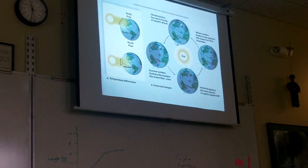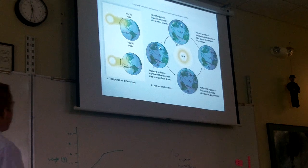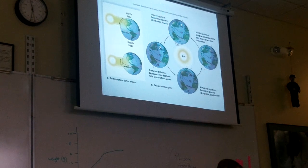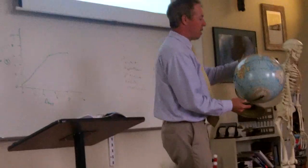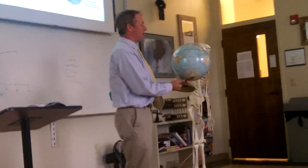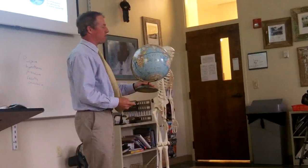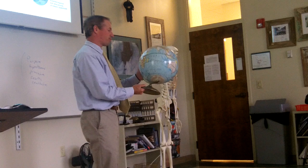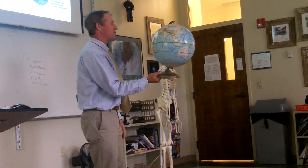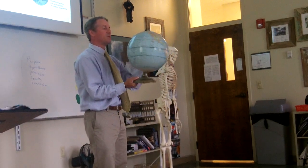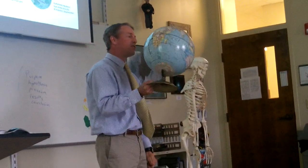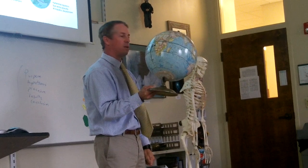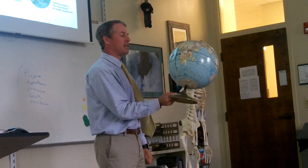Where's my globe? That's up front by the fan. We're learning about the different environments on Earth. One thing we know is that the Earth is round. Not only is it round, it spins, and it is tilted in its orbit around the Sun. So it's got a tilt to it.